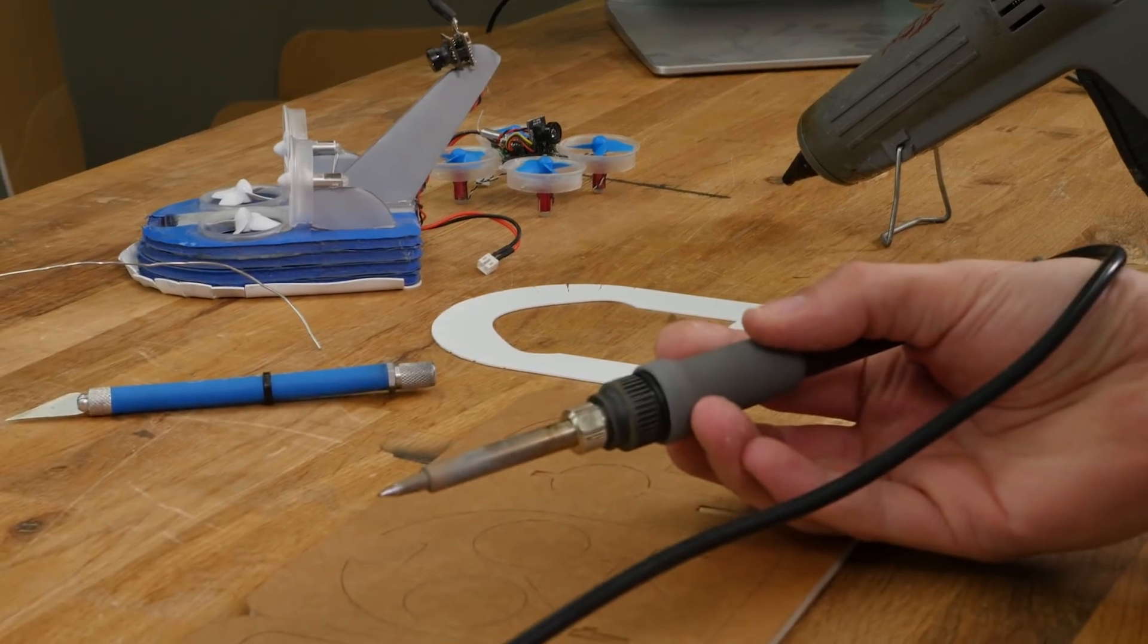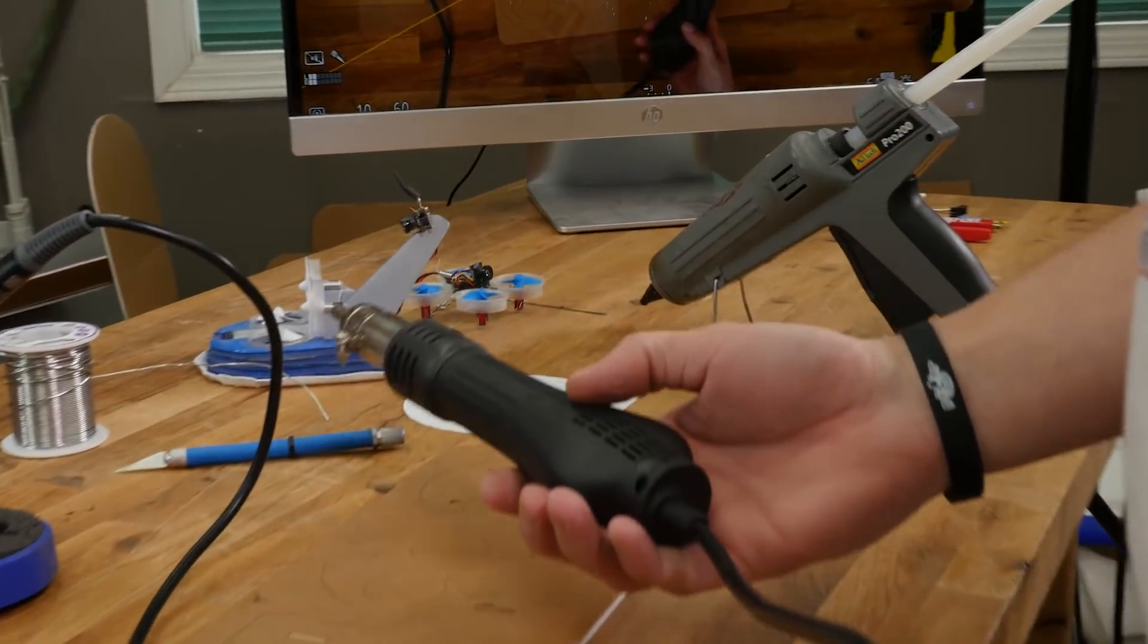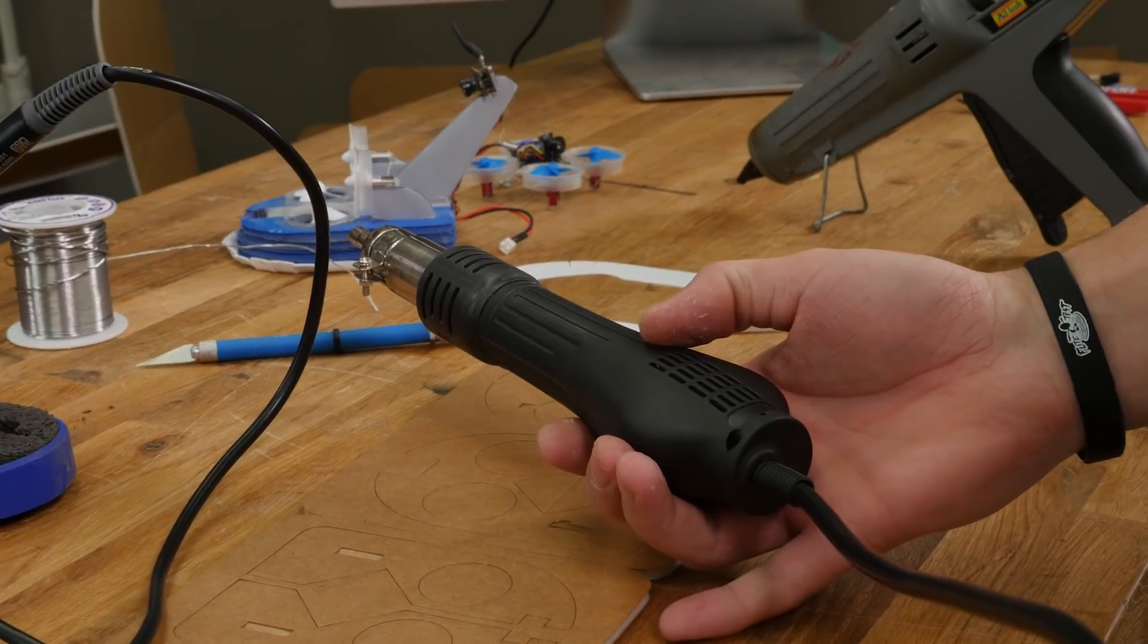We're going to go over the tools you need: hot glue gun, exacto knife, soldering iron, some solder, some kind of heat source. I use a heat gun, you can easily use a blow dryer.